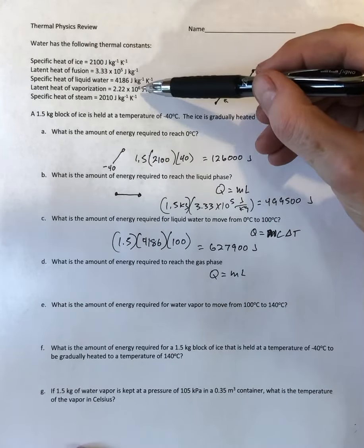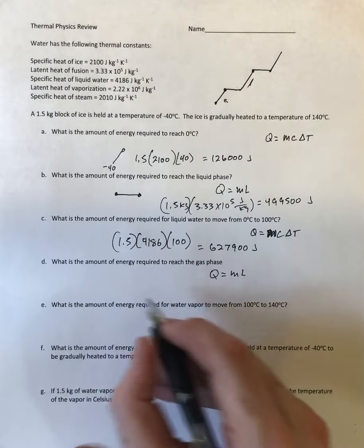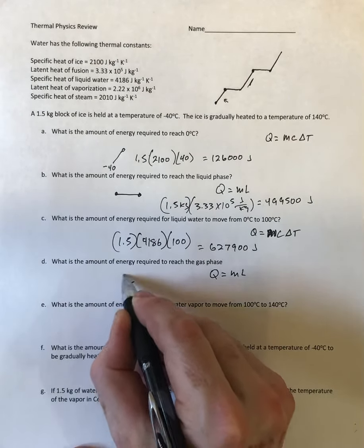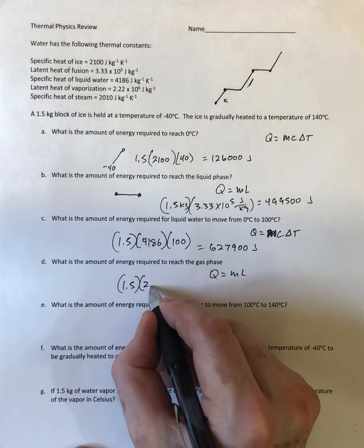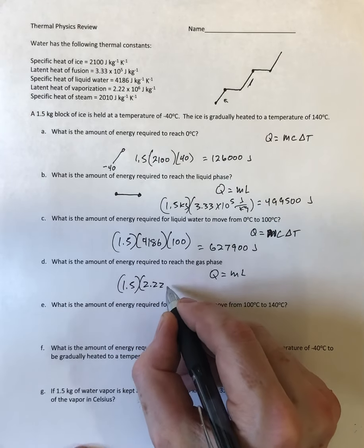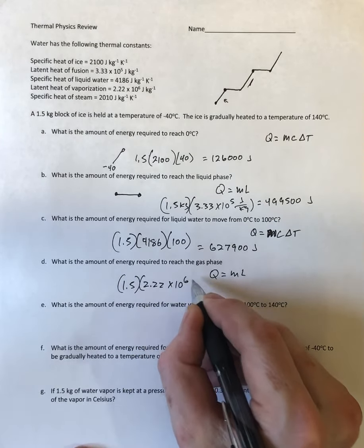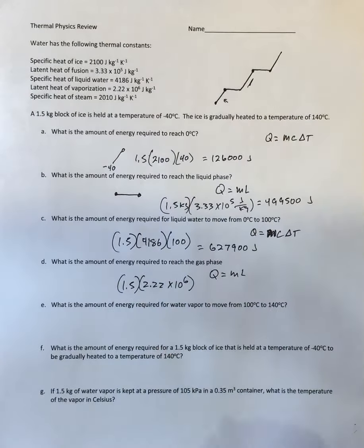So 1.5 kilograms, latent heat of vaporization is 2.22 times 10 to the sixth as joules divided by kilograms for water. 1.5 times 2.22 times 10 to the sixth.